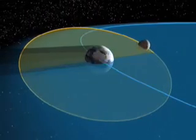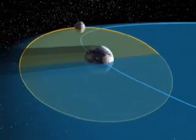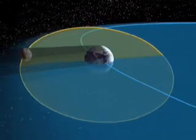This special alignment is only possible during the so-called eclipse seasons, which happen about every six months.